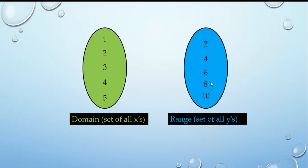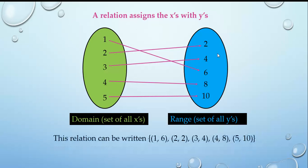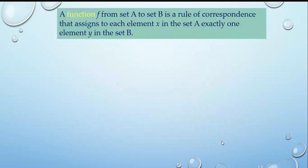In a relation, the domain is the set of all x's and the range is the set of all y's — a relation assigns x's with y's. For example, 1→6, 2→2, 3→4, 4→8, 5→10 gives the relation {(1,6),(2,2),(3,4),(4,8),(5,10)}. Any correspondence between domain and co-domain elements is a relation.